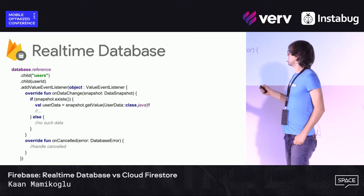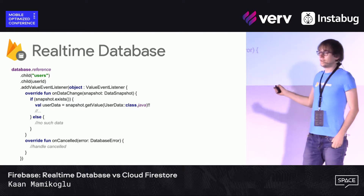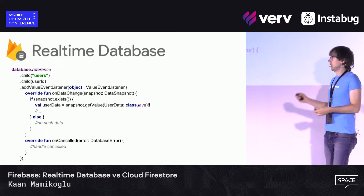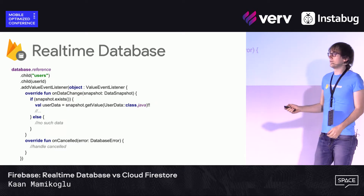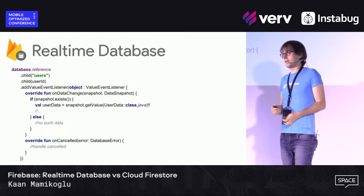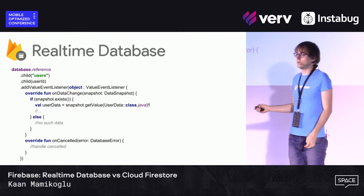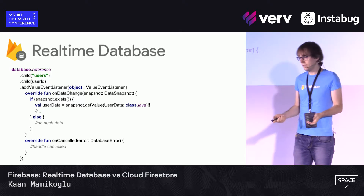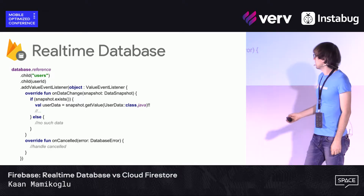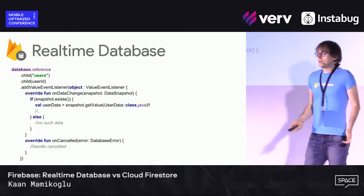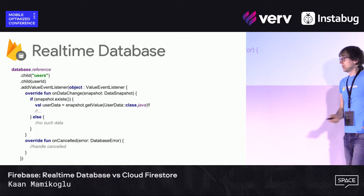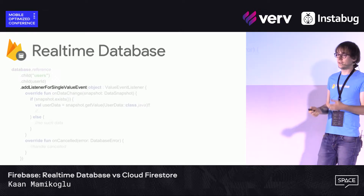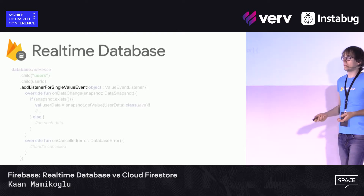This method subscribes you to changes — you will get updates as long as your activity is alive. But if you just want to get the data once, you can use addListenerForSingleValueEvent(), which gets the value once and stops listening.